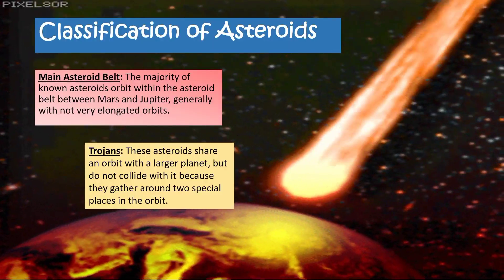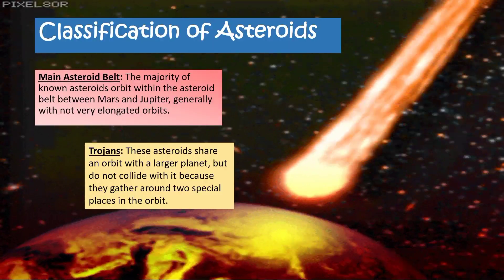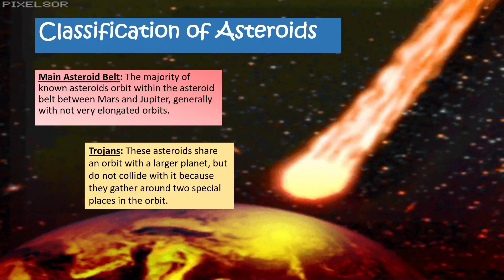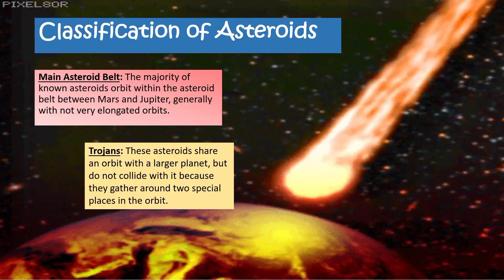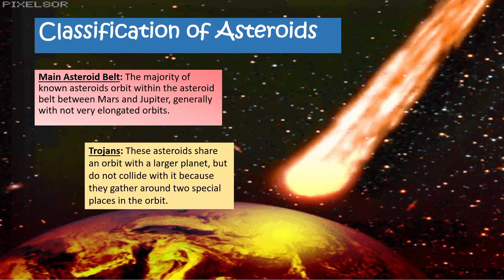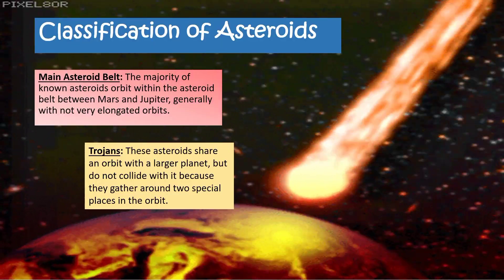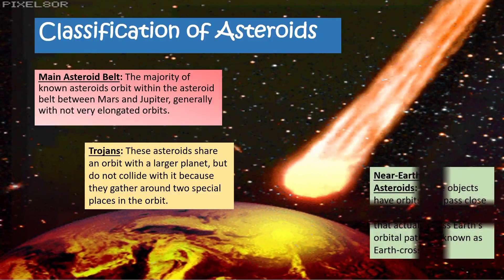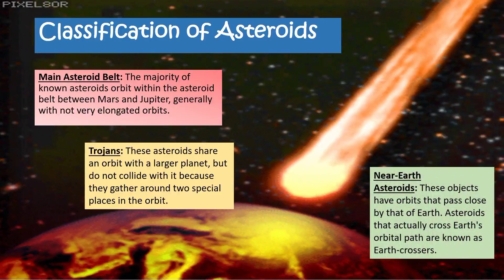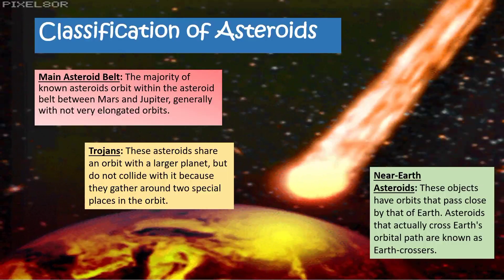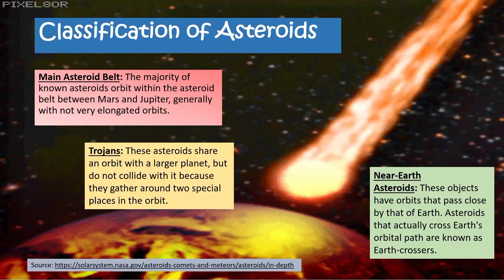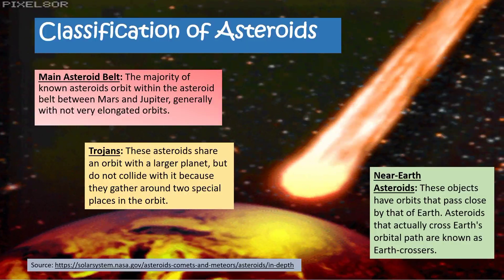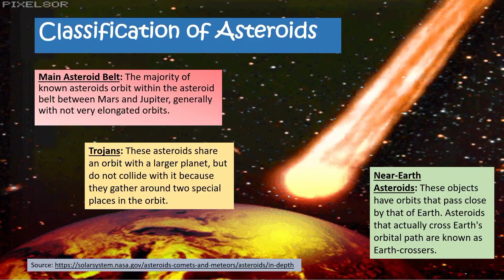We have the Trojans. These asteroids share an orbit with a larger planet, but they do not collide with it because they gather around two special places in the orbit. Aside from that, gravity is very strong so they do not get off their orbits. Then we have near-Earth asteroids. These objects have orbits that pass close by that of Earth. Asteroids that actually cross Earth's orbital path are known as Earth crossers.